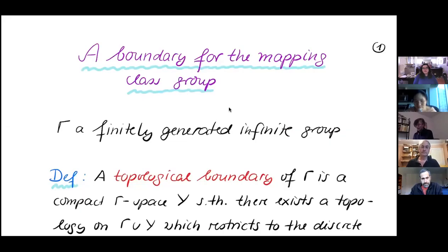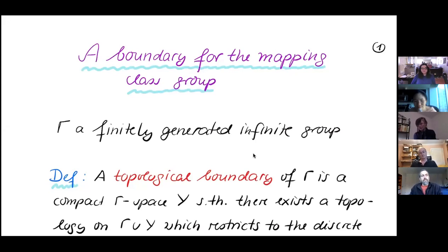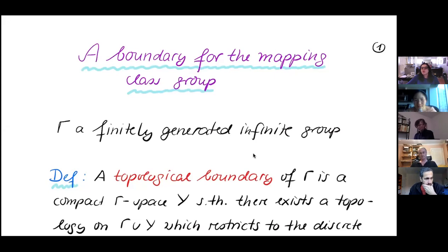We work abstractly with a finitely generated infinite group, let me call this gamma for the moment. We want to try to obtain information on the group via what we call a boundary. Now I have to tell you what a boundary is supposed to mean.